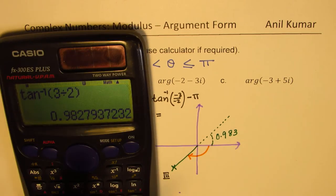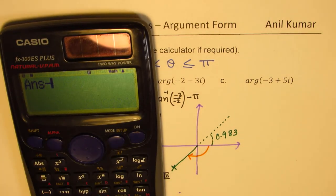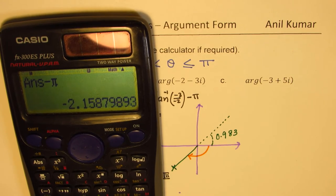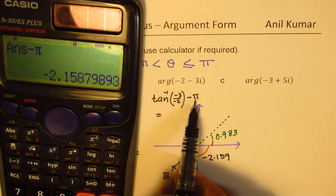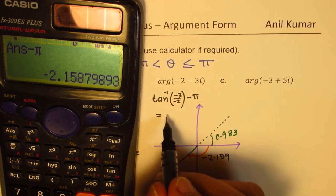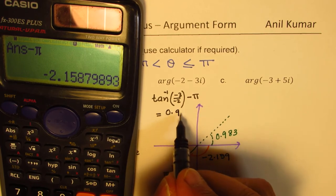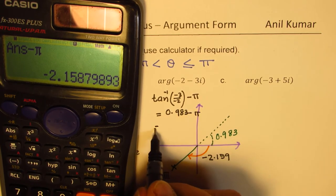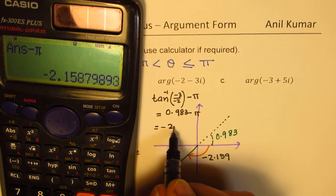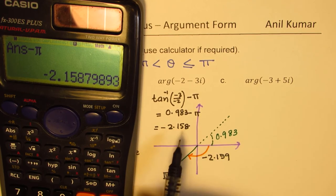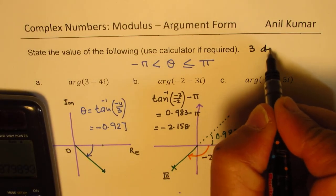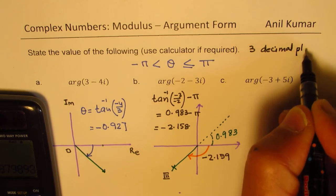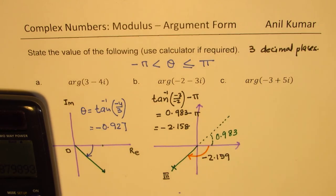So we have to do minus π to get our answer. So from here, we are going to do minus π. And that gives you the right answer. And that is minus 2.159. So we have to do minus π. This is very important to understand. So I'm writing here 0.983 minus π. And that gives you minus 2.158. So I give an answer to 3 decimal places. All answers to 3 decimal places.